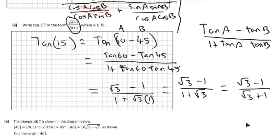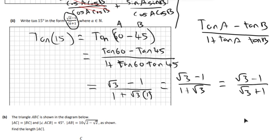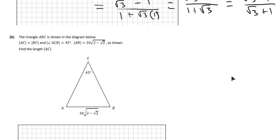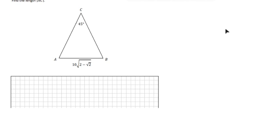The key there was to see that if you've got tan of 15, you change it to tan of 60 minus 45, and then you can use the log tables. Okay, so part B of the question then.